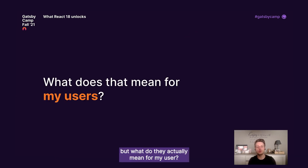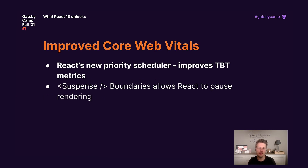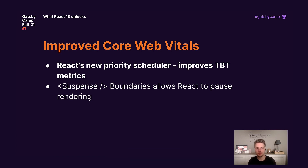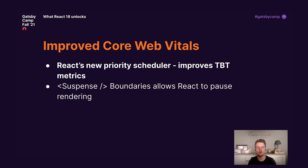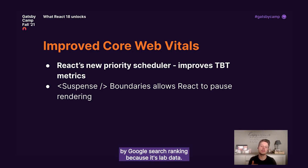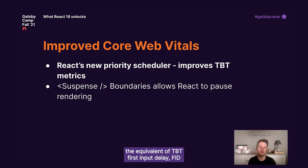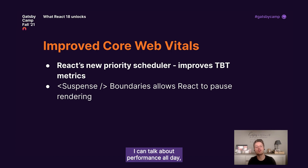Features are cool, but what do they actually mean for my user? Well, remember Core Web Vitals? Google Search Ranking now uses Core Web Vitals to rank your pages. We've seen at Gatsby that React doesn't always play very well with TBT — total blocking time. TBT is not being used by Google Search Ranking because it's lab data. Google Search Ranking uses field data, the equivalent of TBT, which is first input delay, FID. And this is still great with React.